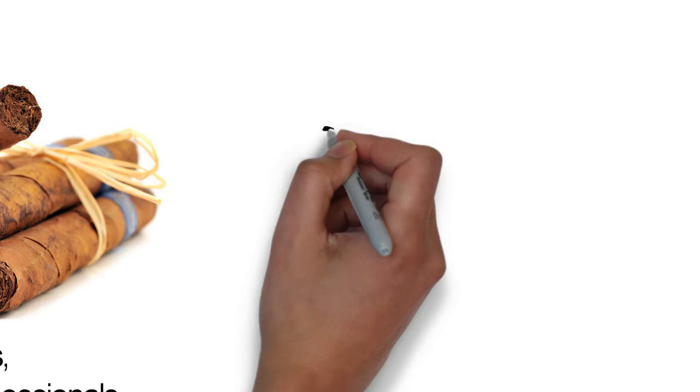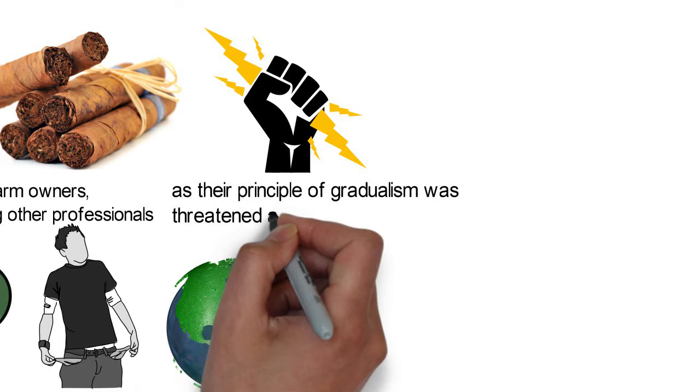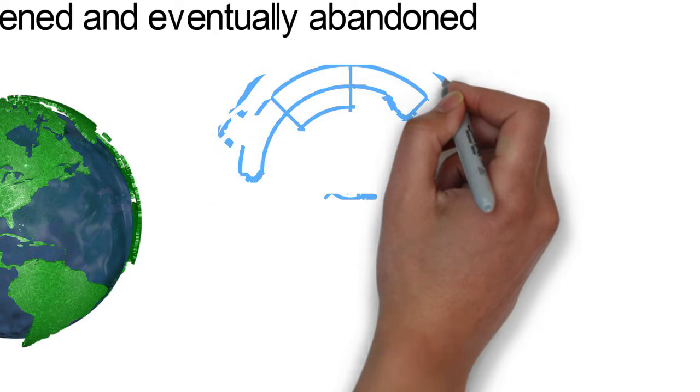After Tanganyika became a United Nations trust territory, the British felt pressured to make more political progress as their principle of gradualism was threatened and eventually abandoned. At this time, the Tanganyikans were already pushing for the country's independence.